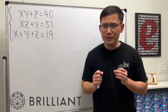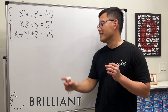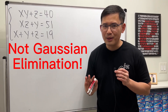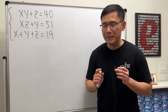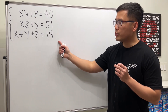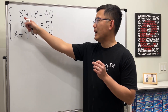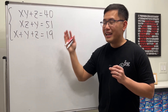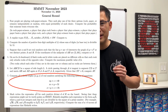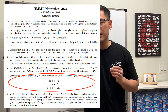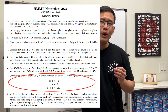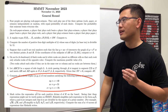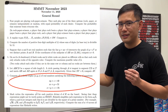I just learned a very nice way to use linear algebra to solve this system of equations, but I'm not talking about Gaussian elimination, because this is not linear — we have x times y and also x times z. This question is from the Harvard-MIT Math Tournament in the year 2023. I will have the link in the description.